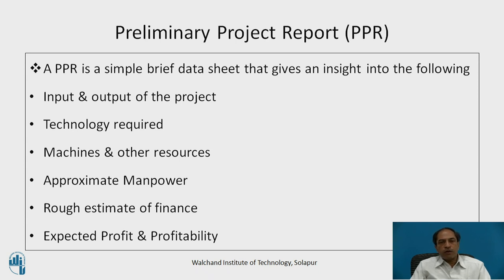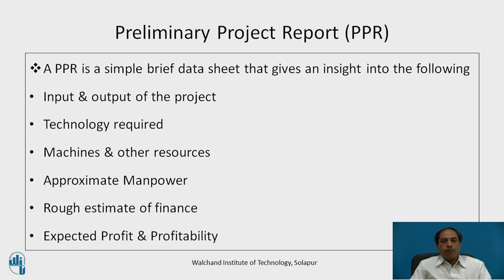The second element is technology required — what are the technology inputs needed for the particular project, machines and other resources. Other resources include infrastructure, land, building, and other things, hardware, software, and approximate manpower required. Manpower may be in a variety of categories: workers, supervisory, and managerial.